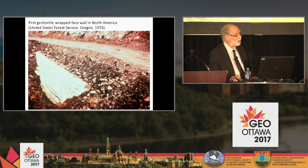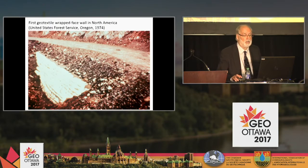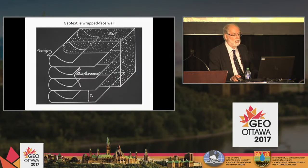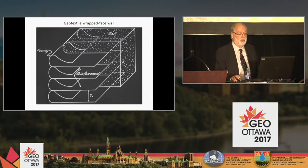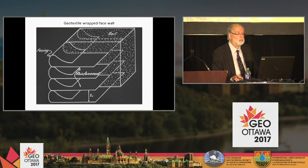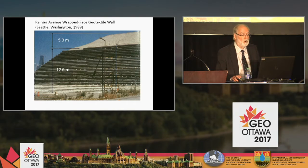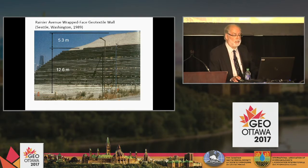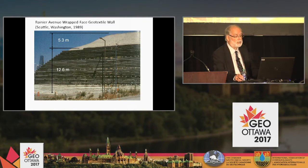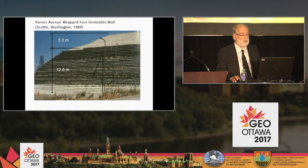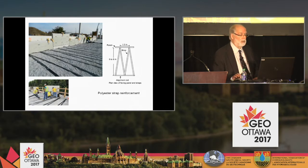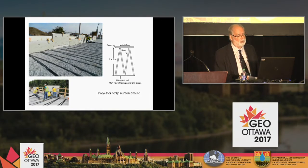Here is a slide of historical interest showing the first wrapped-faced wall constructed in North America. The essential reinforcement geometry is shown here, and it's quite clear why we call these wrapped-faced walls. Substantially larger and higher structures have been constructed since, including a wall constructed in Seattle to support the sides of a very large preload embankment. The geotechnical engineer now has available many different soil reinforcement options for MSE walls, including polyester-strap soil reinforcement.